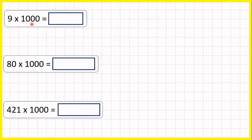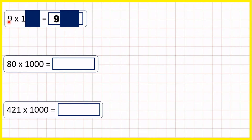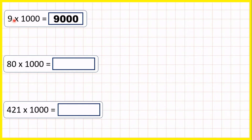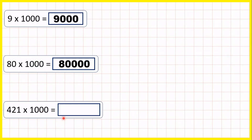Now we're multiplying by 1,000. So 9 times 1,000 is 9,000 — we take our number and because there are three zeros in 1,000 we put three zeros on the end. This trick only works with whole numbers; if we've got decimals we need a different method. So 80 times 1,000 is 80,000 — that's 80 with three zeros on the end. And 421 times 1,000 is 421,000 — that's 421 with three zeros on the end.